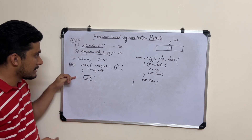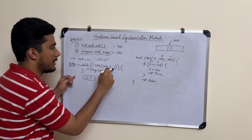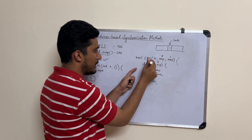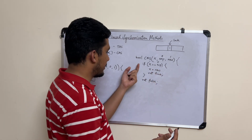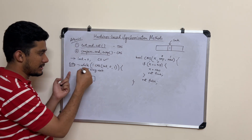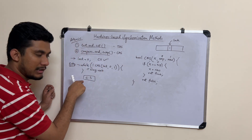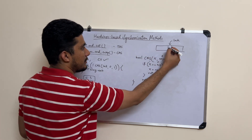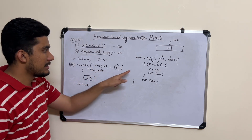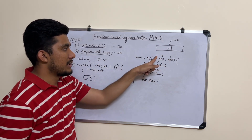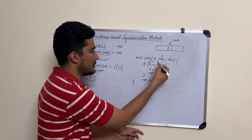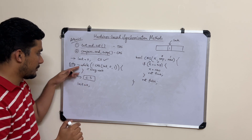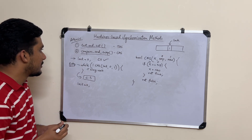Now if another process comes in, lock is 1 but we're expecting 0 — they're not equal, so CAS returns false, NOT false is true, and that process enters busy-wait. Once the first process finishes the critical section it sets the lock back to 0. As soon as lock is 0, the waiting process calls CAS again — now 0 equals 0, the condition matches, lock is set to 1, it returns true, and the process enters the critical section. This way we ensure no two processes are in the critical section simultaneously.